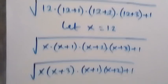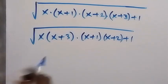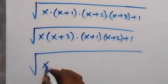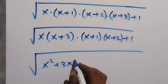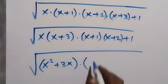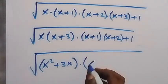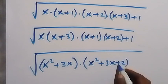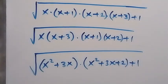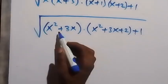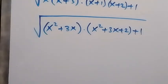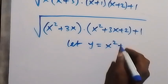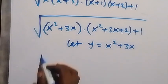Then plus 1. Let's expand this. From here, when we expand the first two we have x times x, giving us square root of x squared plus 3x plus 3x plus 2, then plus 1. From here we have x squared plus 3x also. Let's use a letter to represent that — let y be equal to x squared plus 3x.